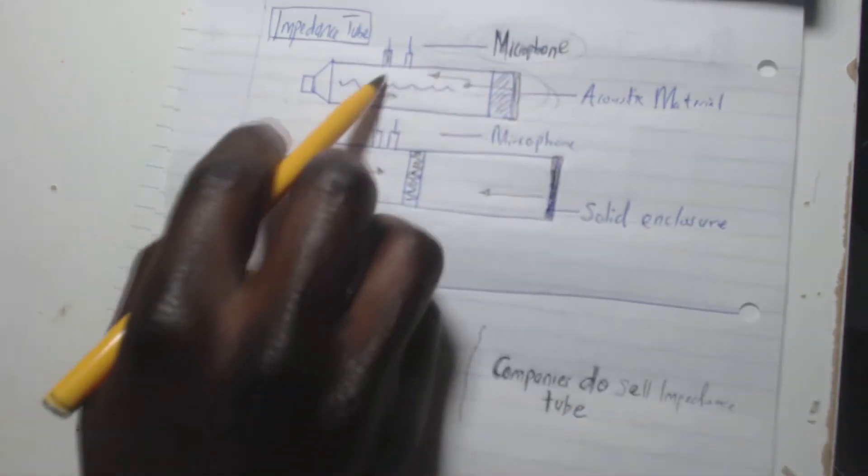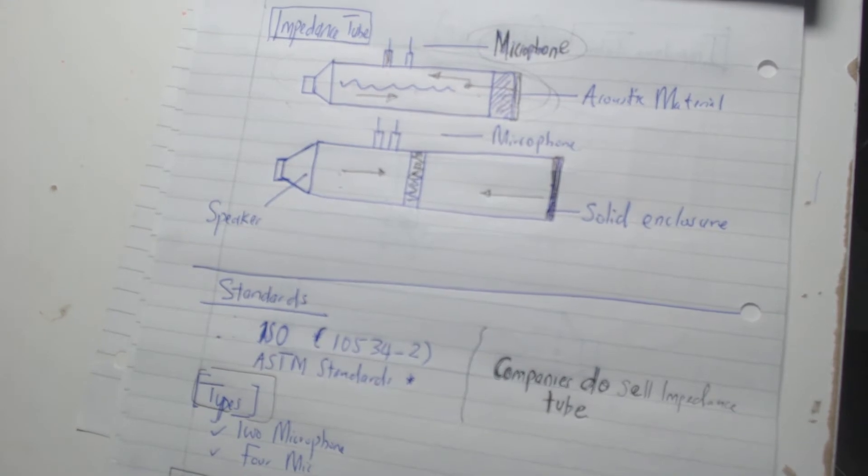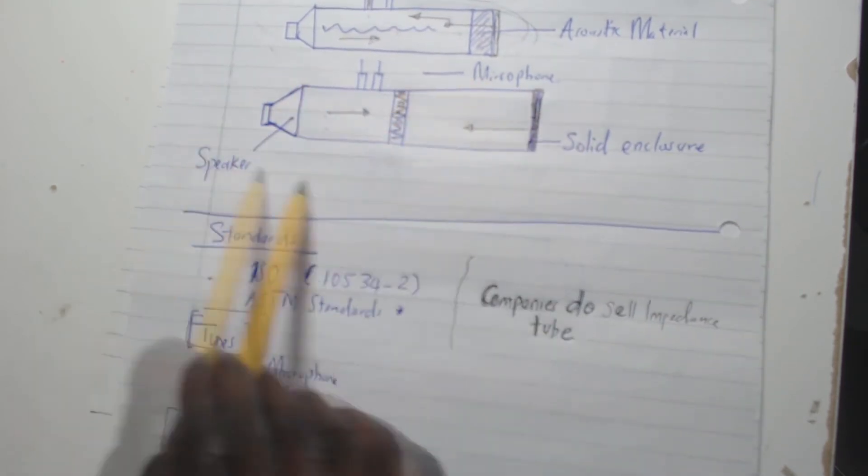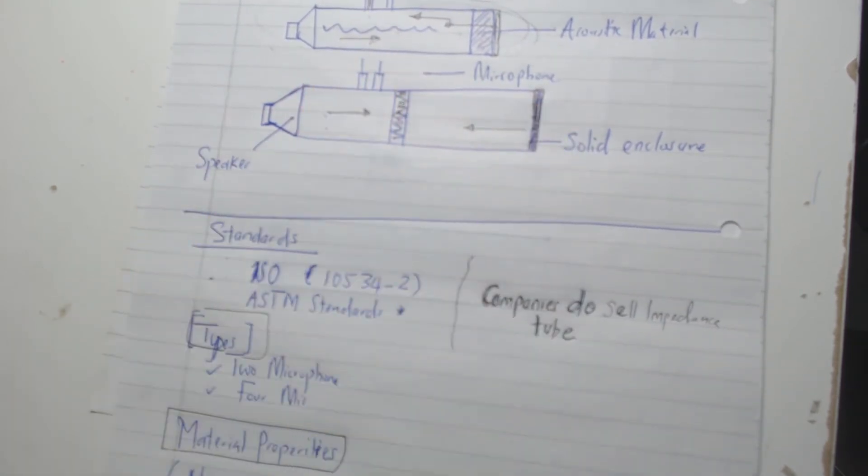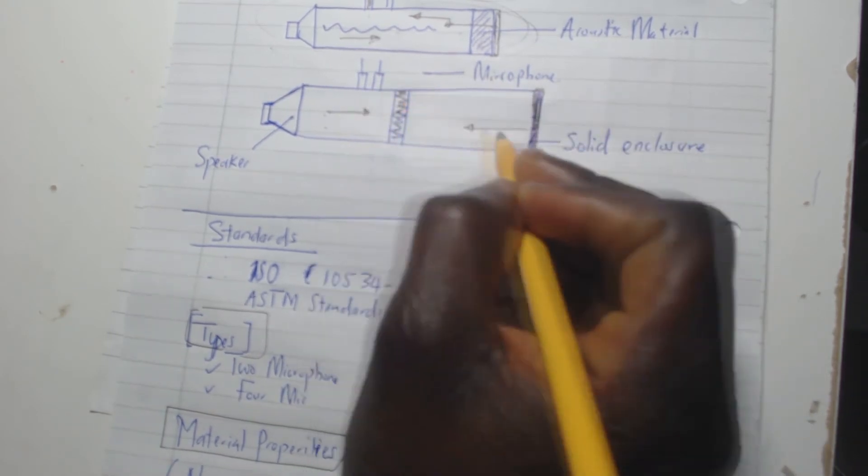And what's happening here: we have microphones, two microphones up there. They are picking up the sound pressures that's happening within this system. Number two is kind of the same thing as figure one, but the setup is a little bit different. It's still a two microphone setup.